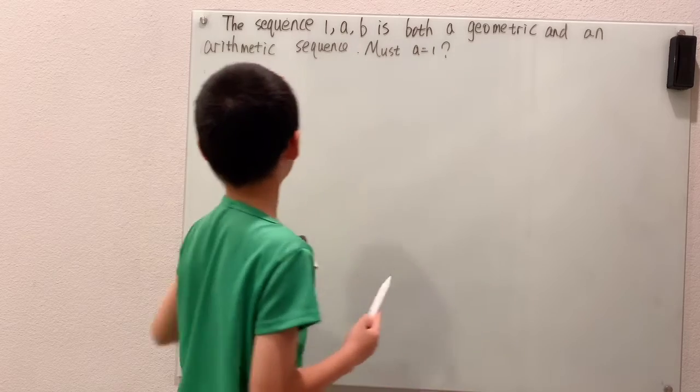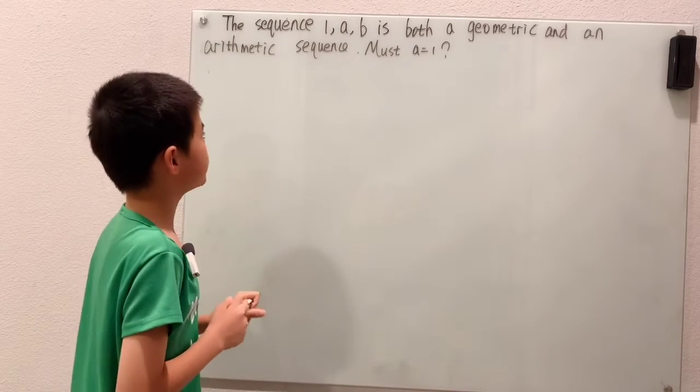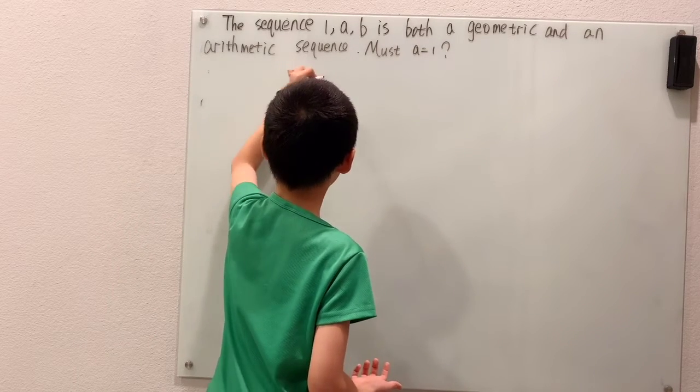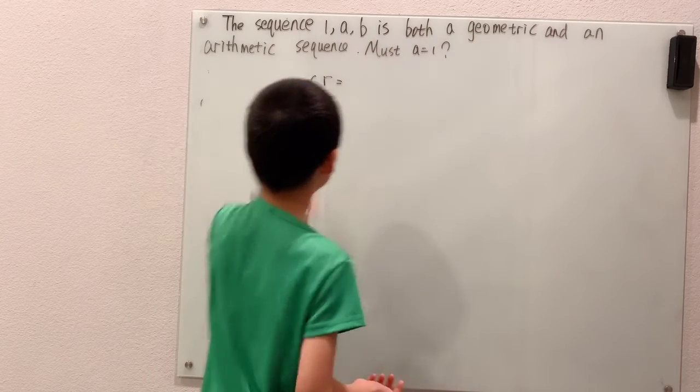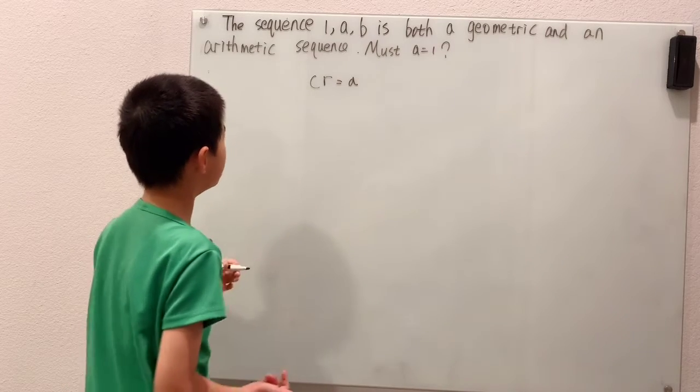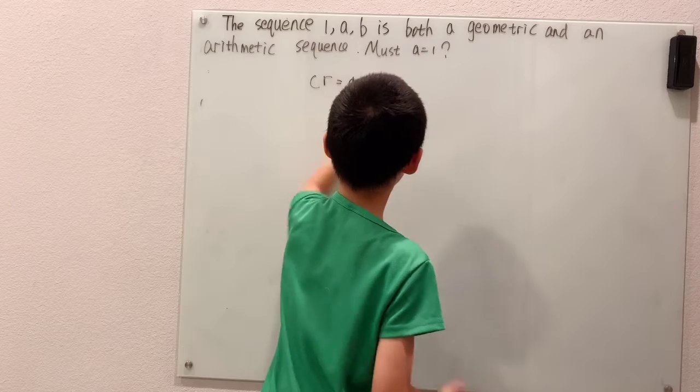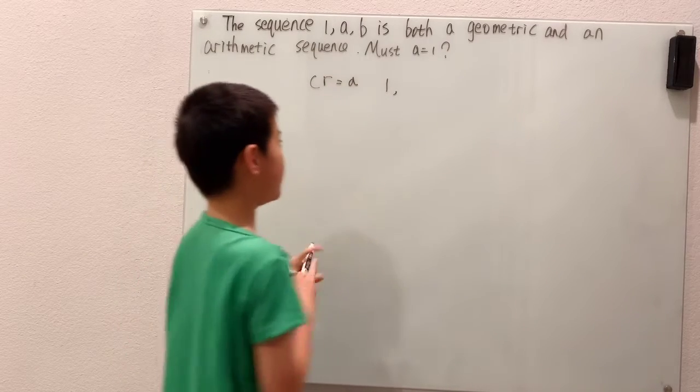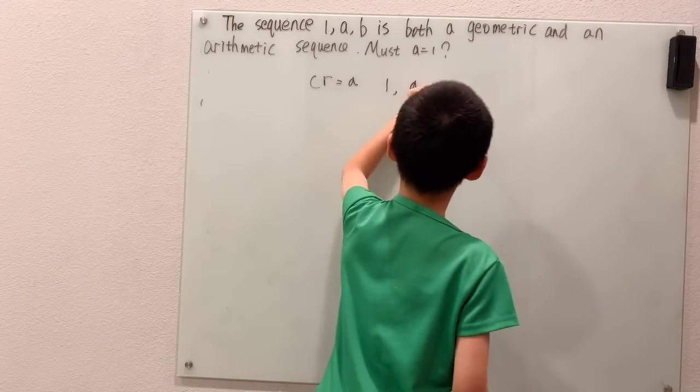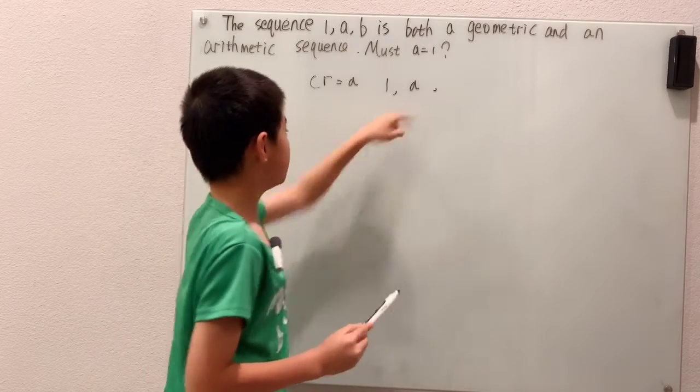So take care of the geometric part first. The common ratio for the geometric sequence is just a, which is very simple. Our sequence will start with one and multiply by the common ratio to get 1 times a, which is still a. Then B we can write in terms of a because it's one times a and then times a again, which is a squared.